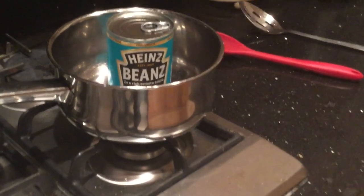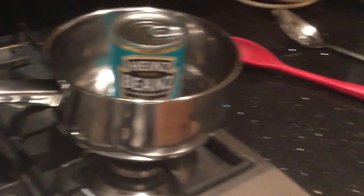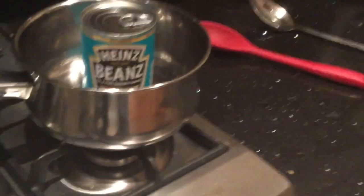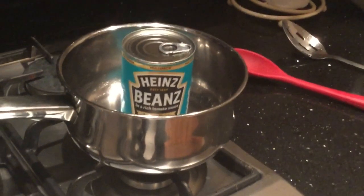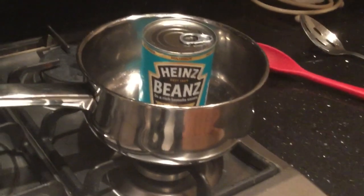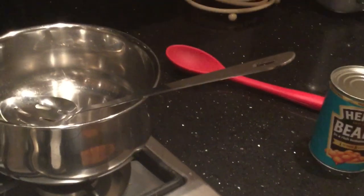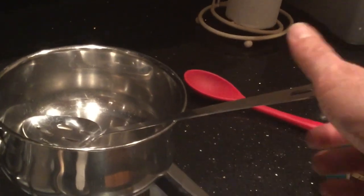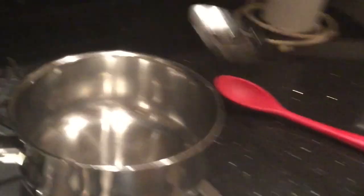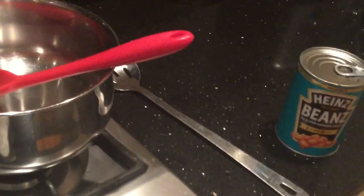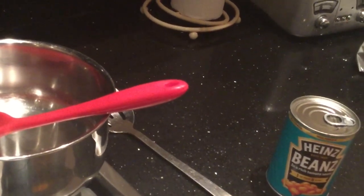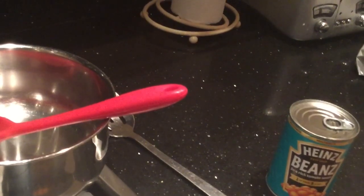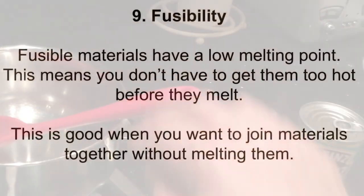Property number eight is thermal conductivity. Good thermal conductors let heat pass through them; good insulators stop heat from passing through. Having a metal pan is really good because metal is a good conductor of heat — it allows heat from the flame to travel through the metal to get to the food. However, leaving a metal spoon in the pan means the heat travels to the handle and would burn your hands. A plastic spoon is far better because plastic is a good insulator, meaning the heat won't travel up to the handle.